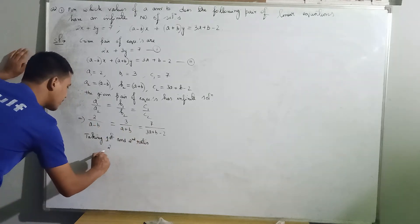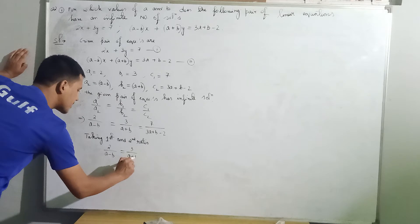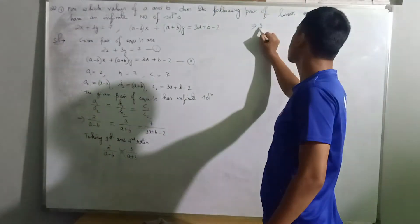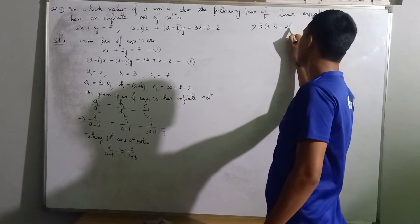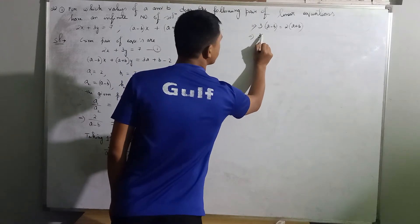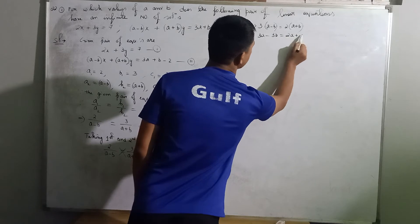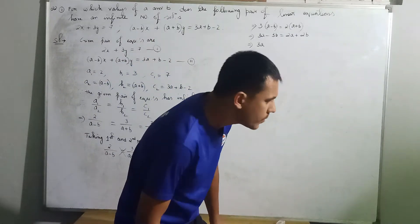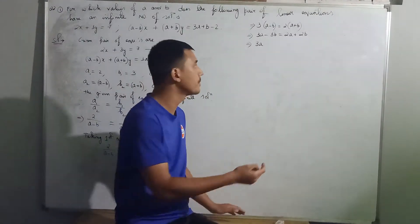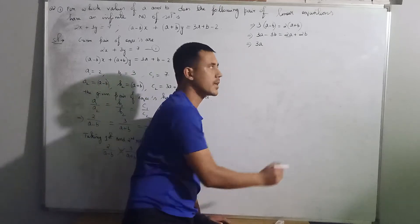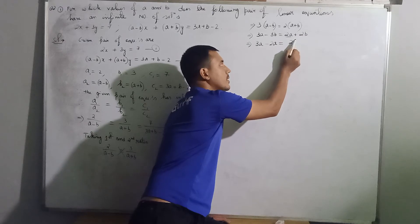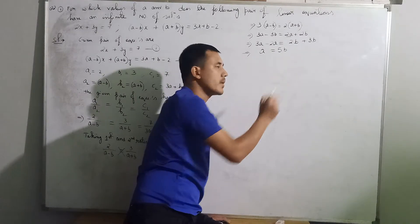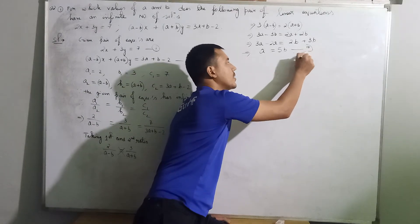Taking the first and second ratio: 2 divided by A minus B equals 3 divided by A plus B. Cross multiplying, we get 3 times of A minus B equal to 2 times of A plus B, which gives 3A minus 3B equals 2A plus 2B. Transposing: 3A minus 2A equals 2B plus 3B, so 1A equals 5B, meaning A is equal to 5B. We make this equation number 3. Using just the first two ratios, we have not obtained A and B individually, so we take another two ratios.